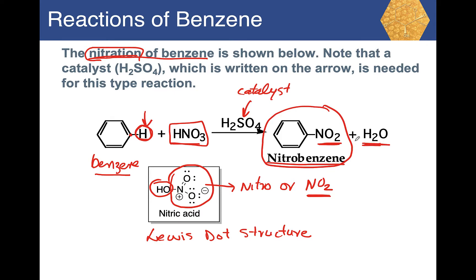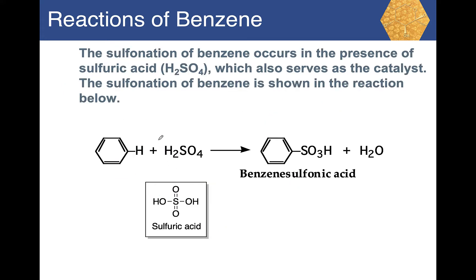You should be able to predict the products of these reactions given the reactants and a catalyst. Another reaction is called sulfonation. As you can imagine, it is a substitution reaction where a sulfonate group is added. Here is benzene with a hydrogen — it could be any one of the six hydrogens.